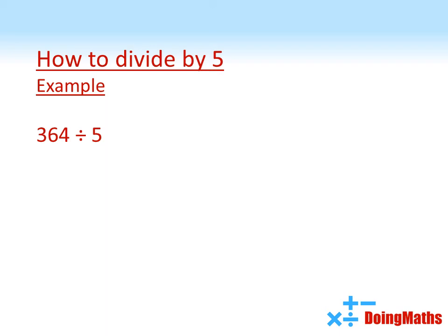Again, this works with trickier examples. Suppose we want to do 364 divided by 5. Note how this one isn't going to divide exactly because it ends in a 4, but we're going to use the same method. Divided by 10 is 36.4, double that answer, 72.8.